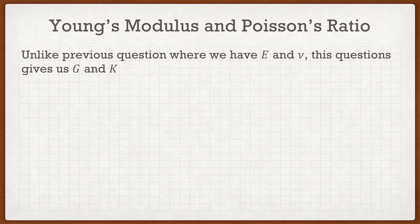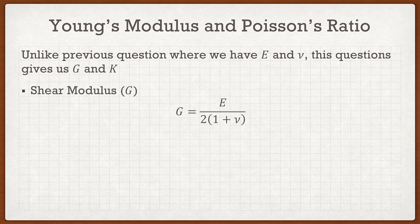The first thing we have to realize is that unlike previous questions where we always have Young's modulus E and Poisson's ratio ν, this question gives us the shear modulus G and the bulk modulus K. Many of you will ask: do I need E and ν? Yes, you do — so we're going to have to solve for them. Looking at the shear modulus formula, G is simply a function of E and ν: G = E / [2(1 + ν)]. That's a pretty simple formula.